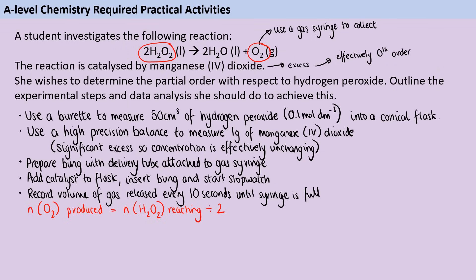Now, the moles of oxygen that are going to be produced are going to be half of the moles of hydrogen peroxide that are being used up. So this is important because it means that by knowing how much gas is produced, we can work out how quickly the concentration of the hydrogen peroxide is changing. And this is going to be important for the analysis that we're going to go on and do.